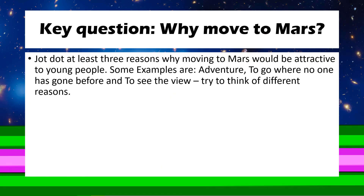Here is the first task. We're going to think about this first key question: why move to Mars? You don't need to have done any research at this point — just think about it for yourself. In your jotter, on a piece of paper, or typed up on a notes app, write down three reasons why moving to Mars would be attractive to young people. It could be because they might think it would be a great adventure, because they want to go where no one has gone before to explore, or to see the view. Try to come up with at least three of your own reasons. If you're having trouble, you can look at the examples on the slide and put them into your own words.